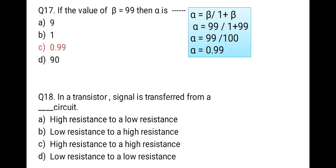The next question: in a transistor, a signal is transferred from a [low] to a [high] circuit. In active mode the transistor works as an amplifier. The first junction is forward biased (low resistance) and the second junction is reverse biased (high resistance). So the signal is transferred from low resistance to high resistance — the correct option is B.